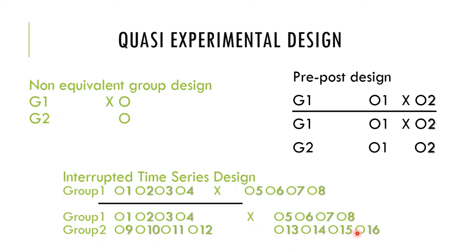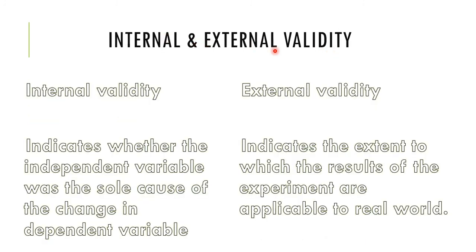Internal and external validity: Internal validity indicates whether the independent variable was the sole cause of the change in the dependent variable — the researcher asks whether the treatment influenced the result or whether threats like history or instrumentation could be responsible. External validity indicates the extent to which the results of the experiment are applicable to the real world.